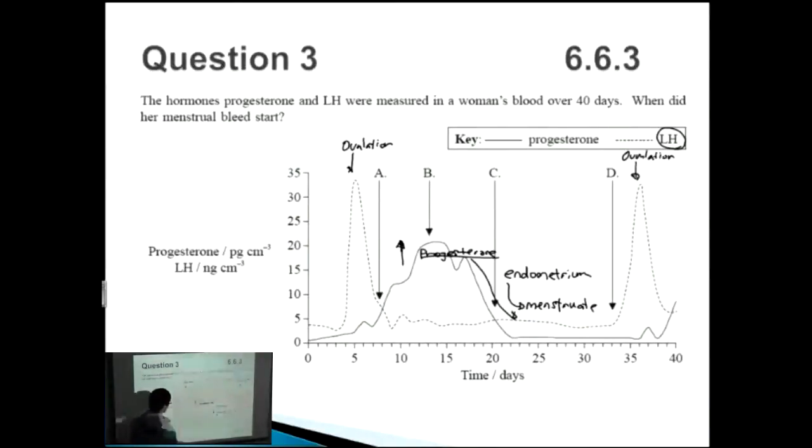So when did her menstrual bleed start? You want to say it's definitely C here because as the progesterone comes down then the endometrium starts dying and then the menstrual bleed starts as well.